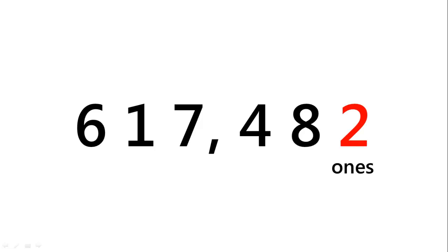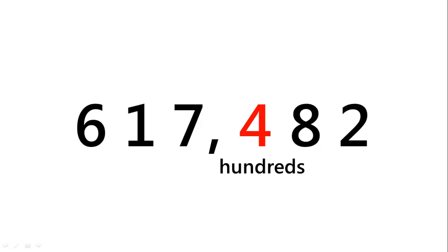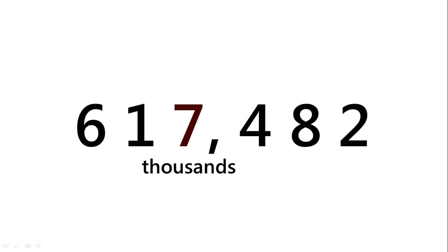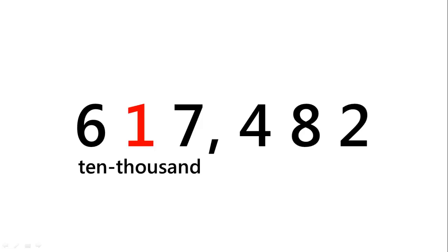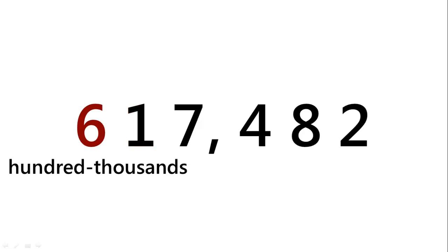Let's look at another number and identify the place value for each digit. In this whole number, we have 2 ones, 8 tens, 4 hundreds, 7 thousands, 1 ten thousand, and 6 hundred thousands.